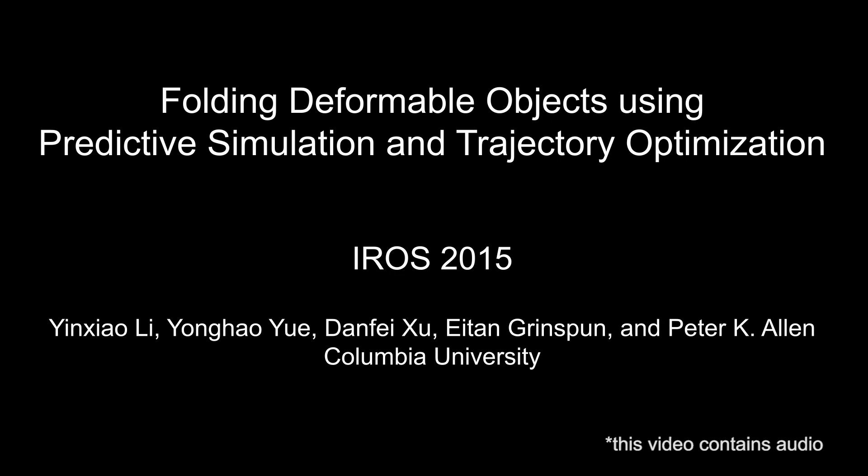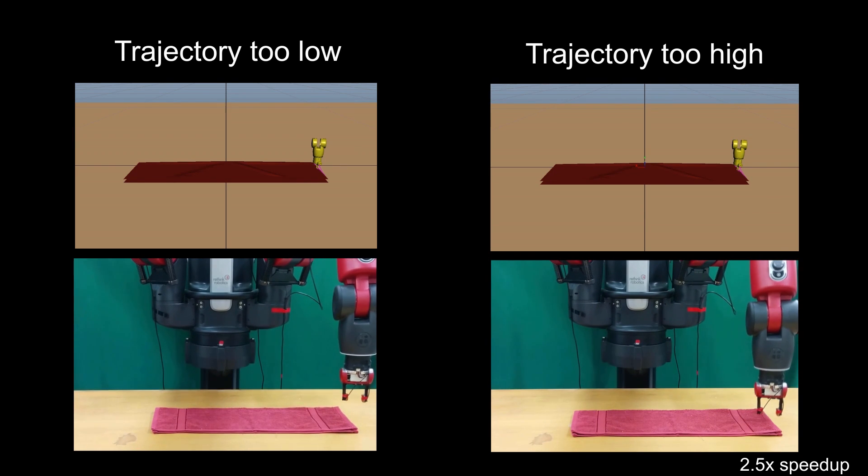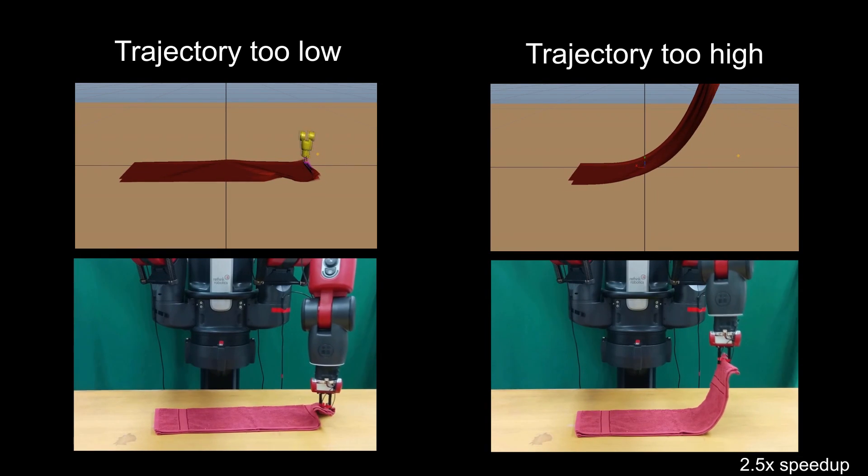Robotic manipulation of deformable objects remains a challenging task. One such task is folding a garment autonomously. Given start and ending folding positions, what is an optimal trajectory to move the robotic arm to fold a garment?